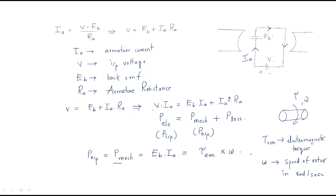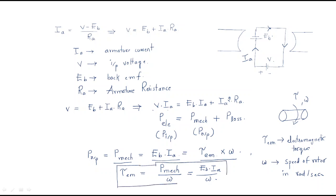Using the relation mechanical power = TEM × ω, we can derive the electromagnetic torque: TEM = mechanical power / ω = Eb·Ia / ω. This is the complete electromagnetic torque equation — it represents how electrical power applied to the motor produces mechanical torque.